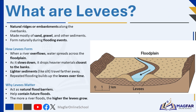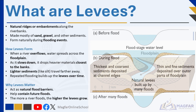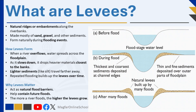Levees are natural ridges or embankments found along the sides of a river channel, usually made up of sand or gravel. They form during flooding when the river overflows its banks and spreads out across the floodplain. As the water slows down, it drops heavier materials like sand and gravel closest to the riverbank, while finer particles like silt are carried farther away. Over time, repeated floods deposit more material along the banks, gradually building up raised levees. These natural levees help contain future floods by acting as barriers — the more often a river floods, the higher and more pronounced they become.